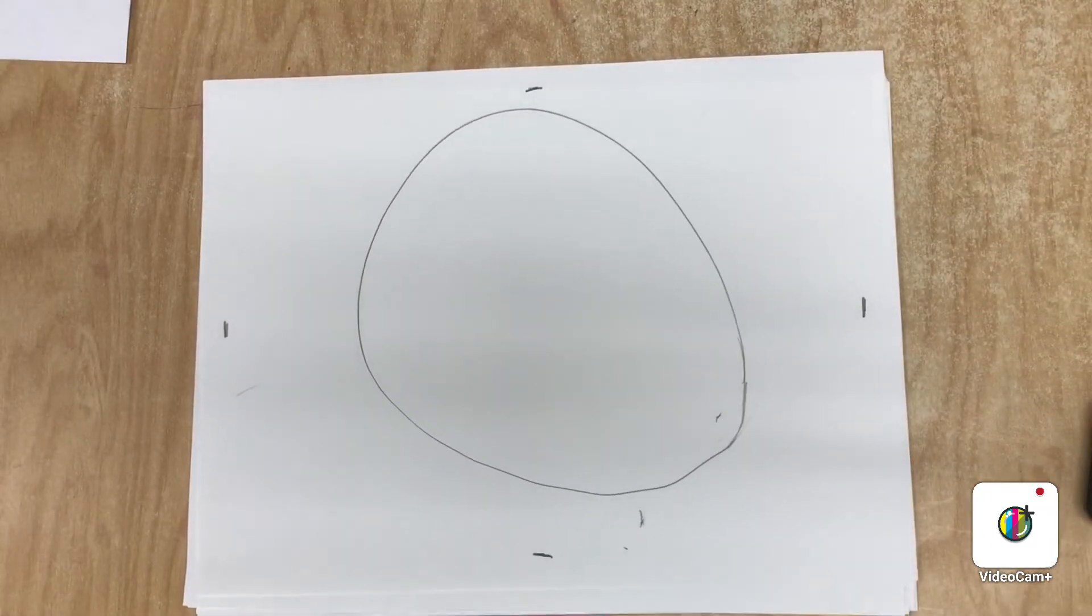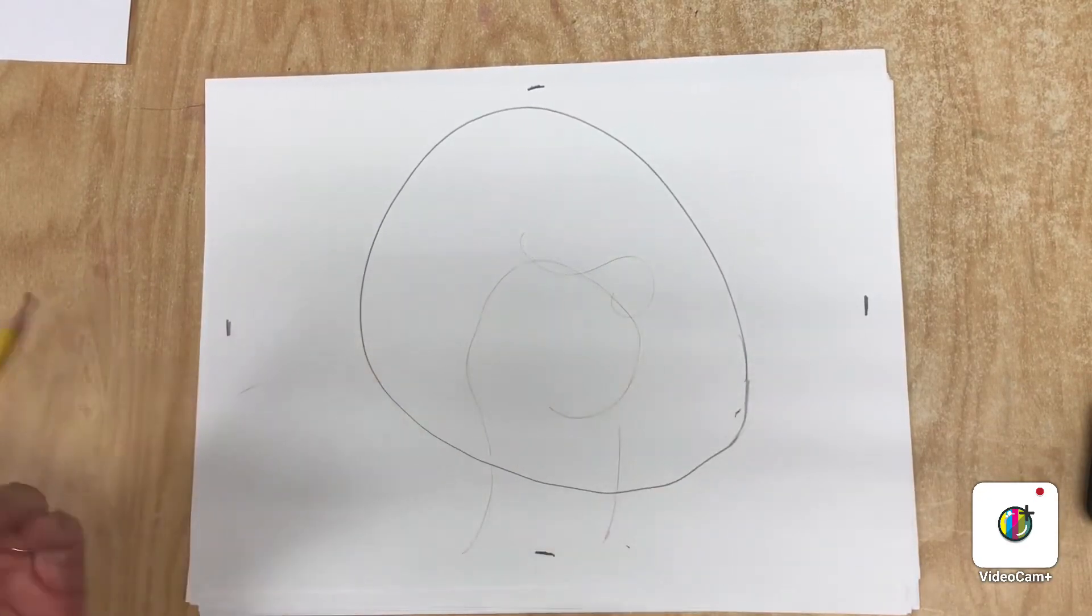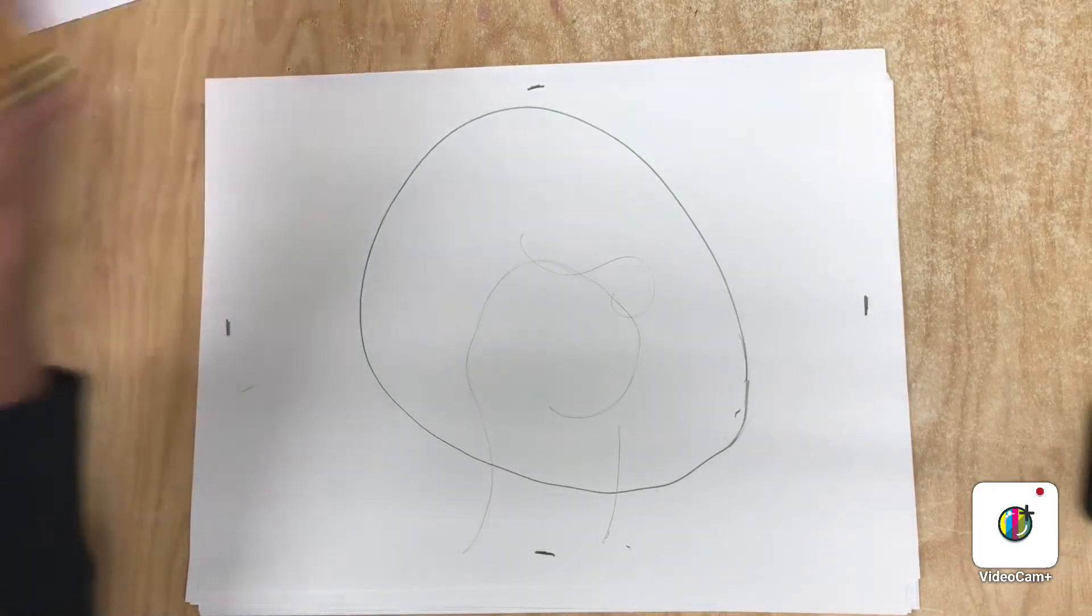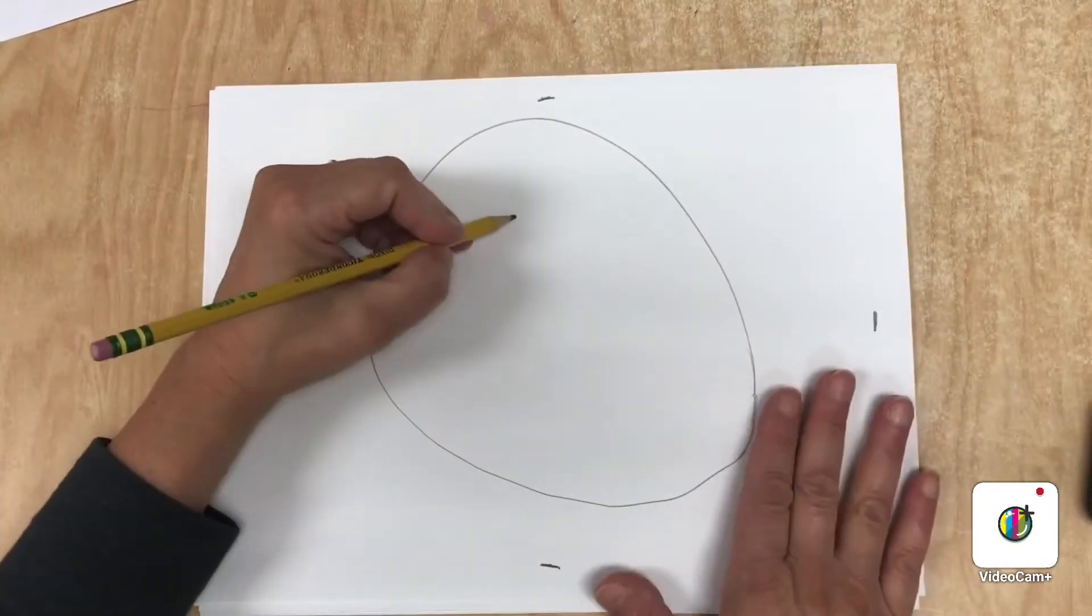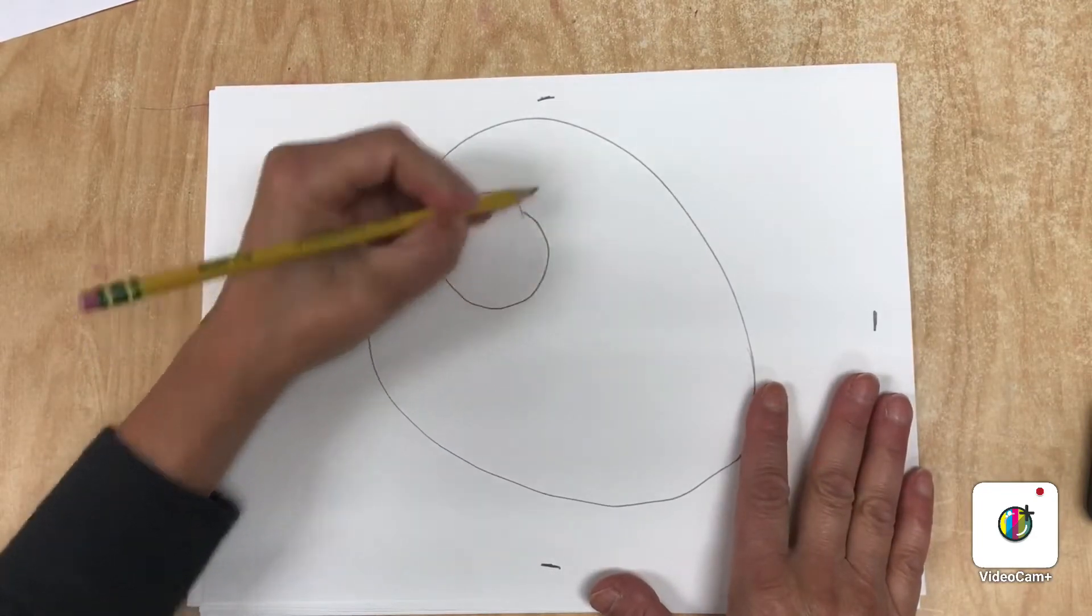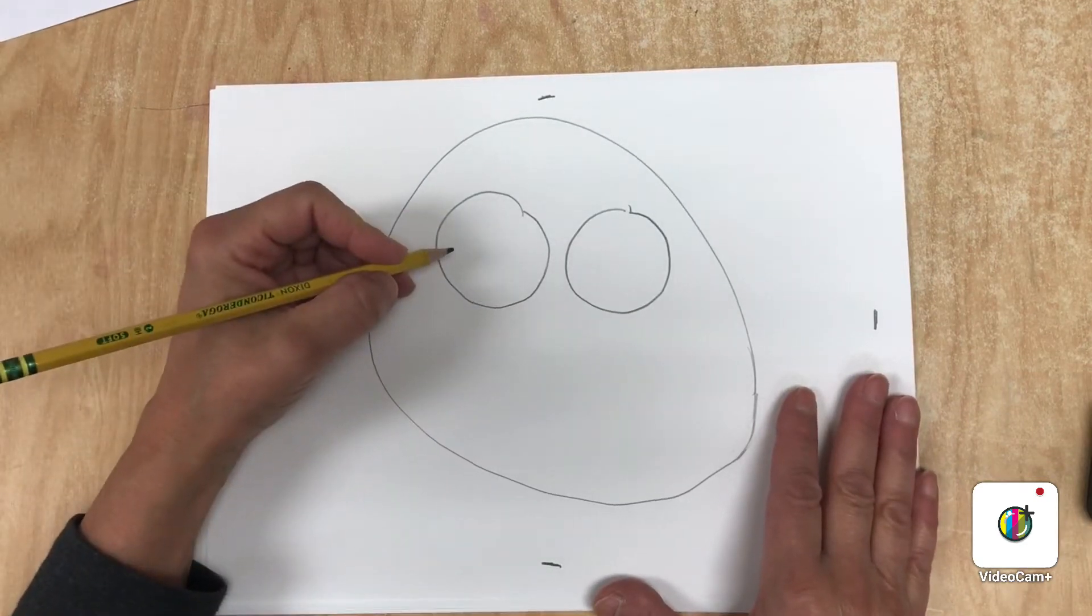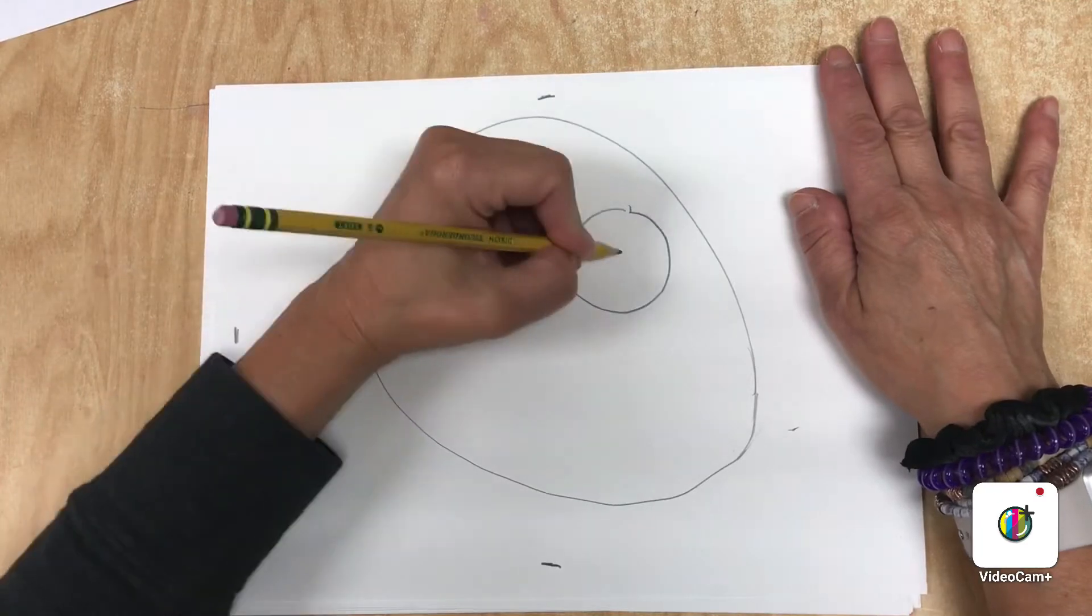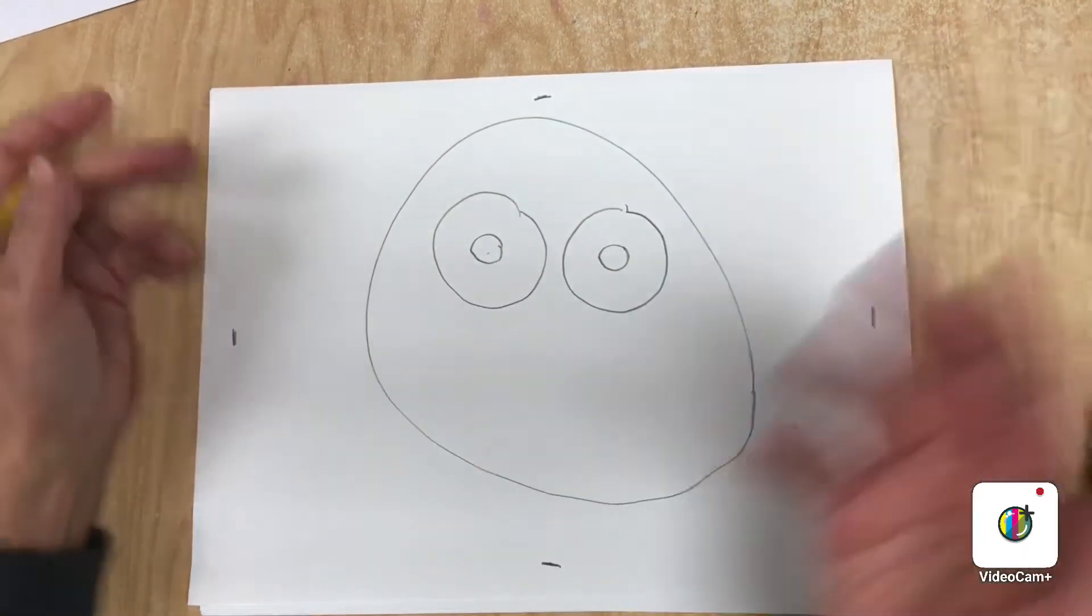Once you have the body, decide what kind of eyes you want. There will be an idea sheet in the slideshow too. One way to make something look really cute is to make the eyes really big. So if you want a cute, friendly monster, you can make really big eyes, and if you want to, you can make a circle inside and color that later.